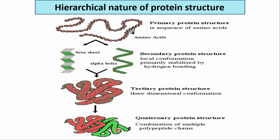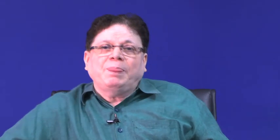Disulfide bonds can also occur between different monomeric forms to make multimeric ensembles. Apart from disulfide bonds, all other stabilizing forces are weak interactions: hydrogen bonds in secondary structure; in tertiary structure, hydrophobic interactions, salt bridges, and pi-stacking interactions are all present.